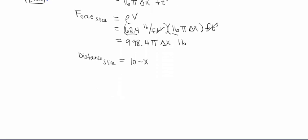So now we can figure out the work done on a slice. So work is gonna be this force on the slice times the distance of our slice. That's why we took the time to write all these things out. So then we're gonna end up doing 998.4πΔx, and we're gonna be multiplying that by 10 minus x. And this distance, since obviously we're traveling in feet, is also gonna be in feet.